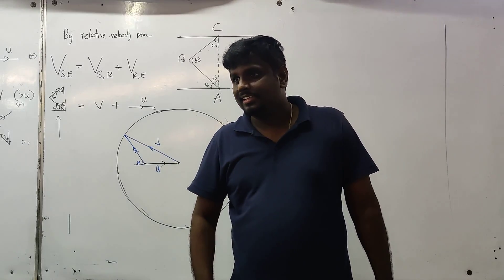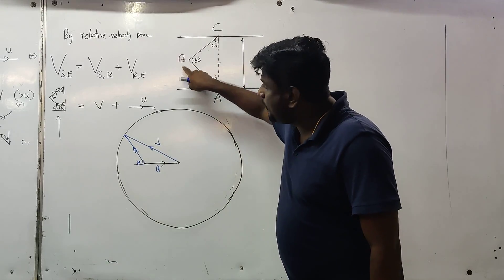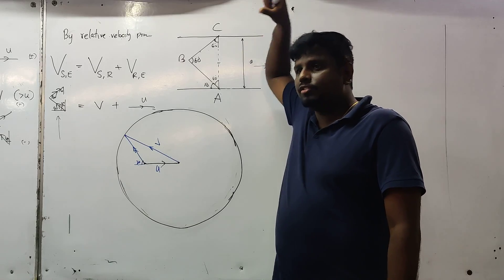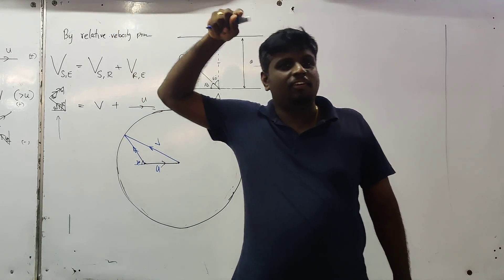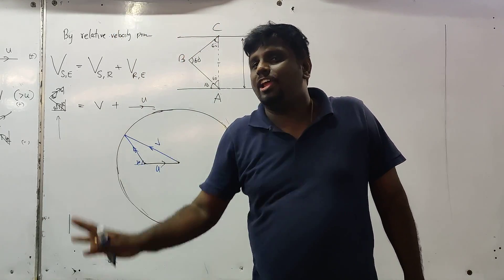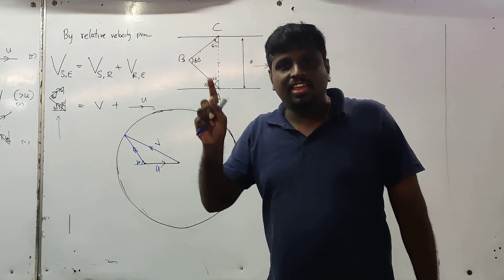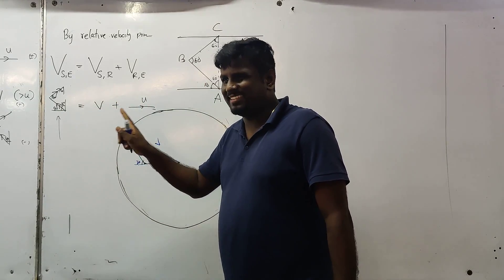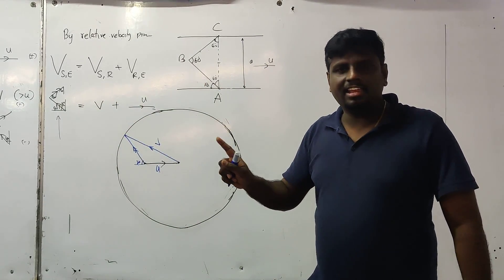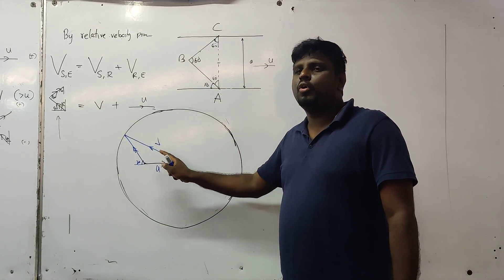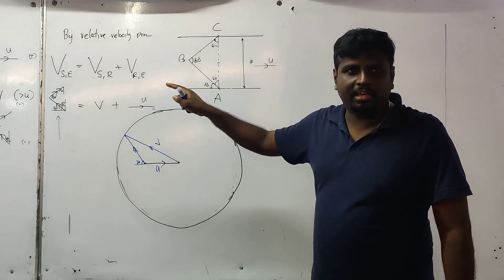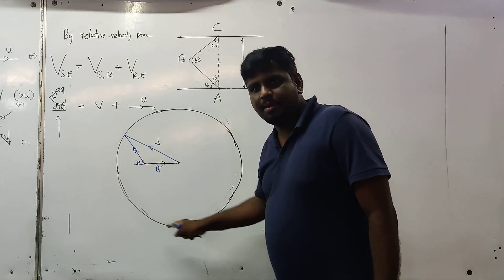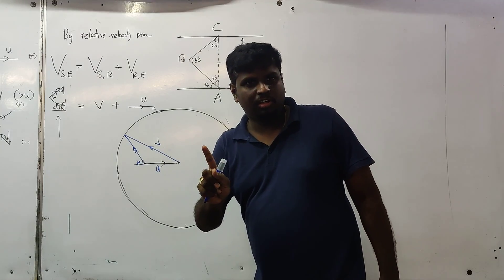After that, from B it goes to C, so we have to draw another velocity triangle for that. But fortunately we have all the circles — again V and U, same as before. You don't need to draw another circle on another paper; you can use the same diagram.